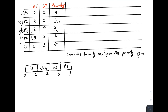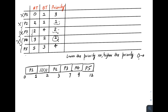At time seven, P4 and P5 are both in the ready queue. P4 has priority two which is lower in number and therefore higher in priority, so P4 gets the CPU and runs from seven to nine. Finally, only P5 remains; its burst time is three, so it runs from nine to twelve. This completes the Gantt chart.